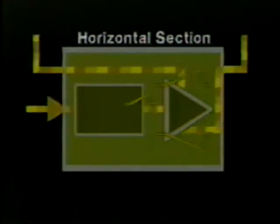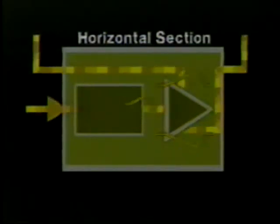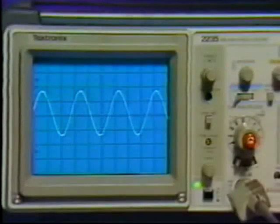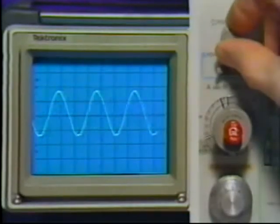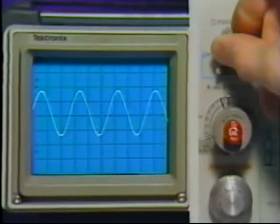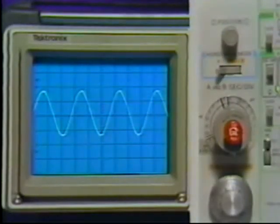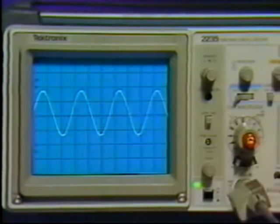Like the vertical output amplifier, the horizontal output amplifier also produces a push-pull output. Push-pull circuits provide greater trace linearity. One of the front panel controls related to this block is the horizontal position control — it moves the trace back and forth, enabling the operator to position the display for convenient viewing. With both horizontal and vertical signals applied to the CRT, we see a display that is typical of triggered sweep oscilloscopes.